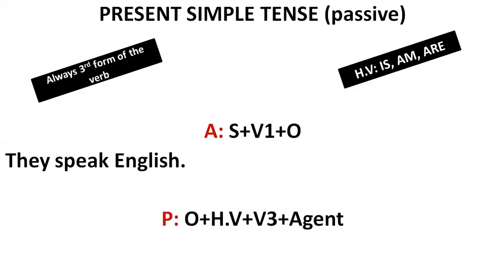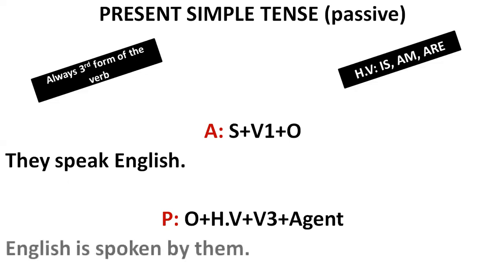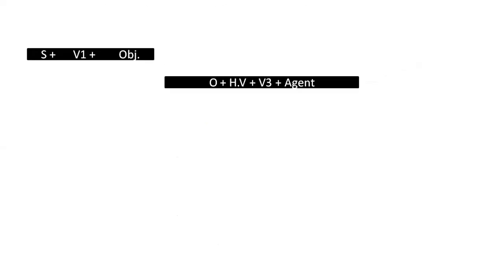Our active sentence ends with the object. So first we take the object and place it at the beginning. Then we use the helping verb — 'is', 'am', or 'are'. Then we use the third form of the verb. Then the agent — by me, by you, by her, by them. 'They speak English' — English comes first. English is singular, so 'is' is used. The third form of 'speak' is 'spoken'. 'English is spoken by them.' So: They speak English → English is spoken by them.